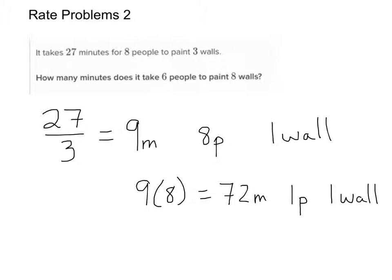Now we use that information for part B: how many minutes does it take 6 people to paint 8 walls? It takes 72 minutes for 1 person to paint 1 wall. So how many minutes would it take for 1 person to paint 8 walls? We multiply: 72 minutes times 8 walls gives us 576 minutes.